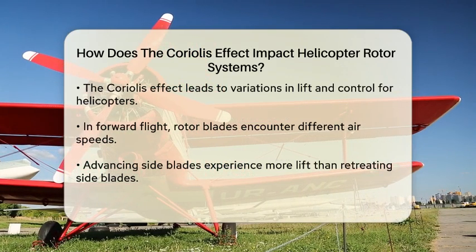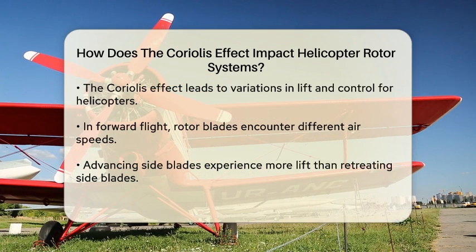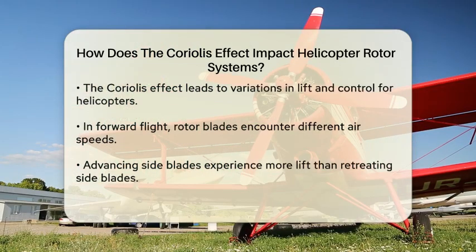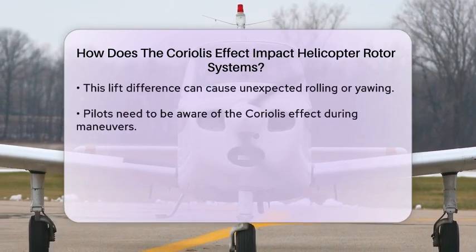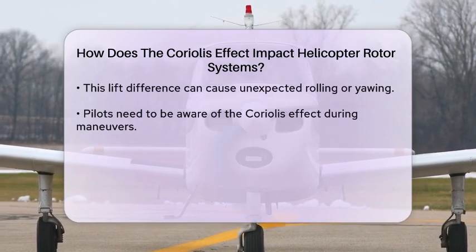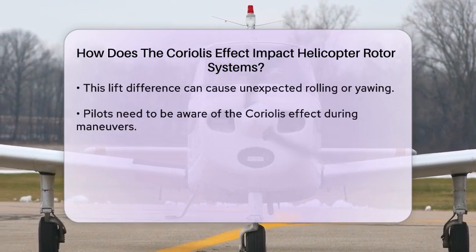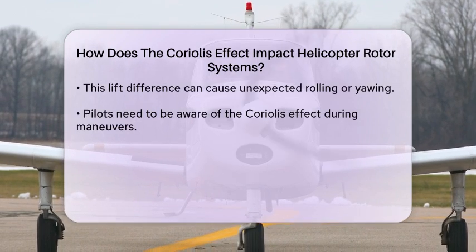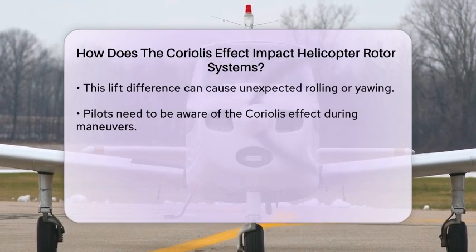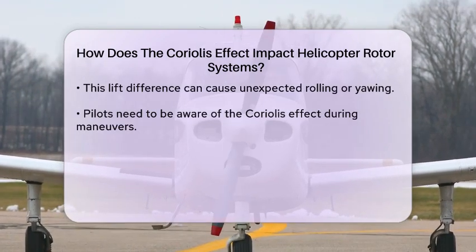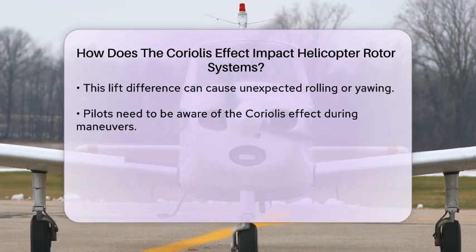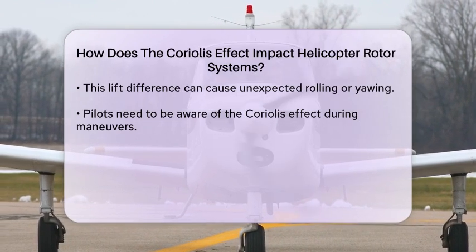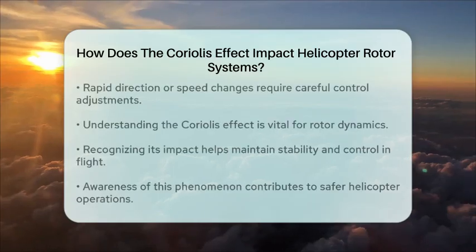When a helicopter is in forward flight, the rotor blades move through different air speeds due to the rotation of the Earth. The blades on the advancing side of the rotor disc experience more lift compared to those on the retreating side. This difference in lift can cause the helicopter to roll or yaw unexpectedly if not properly managed. Pilots must be aware of the Coriolis effect, especially during maneuvers that involve rapid changes in direction or speed.